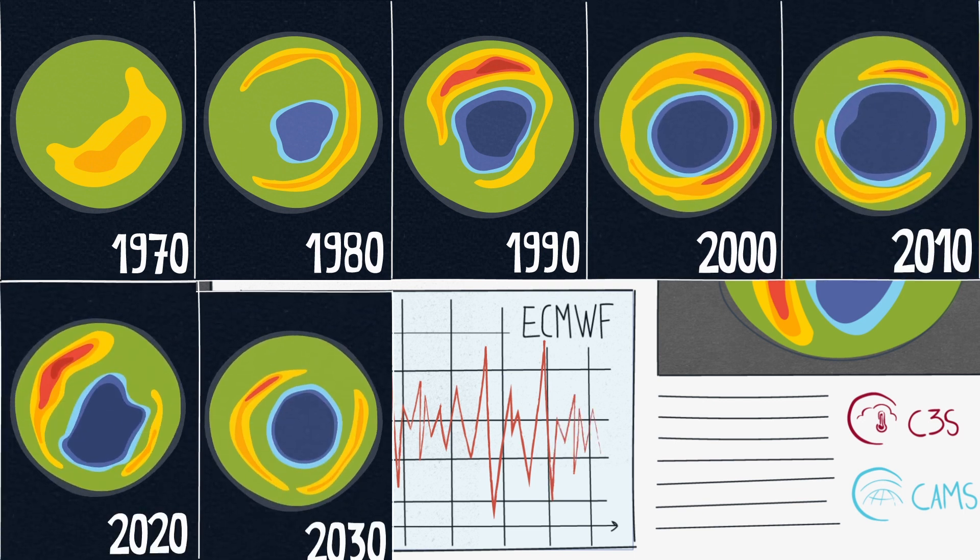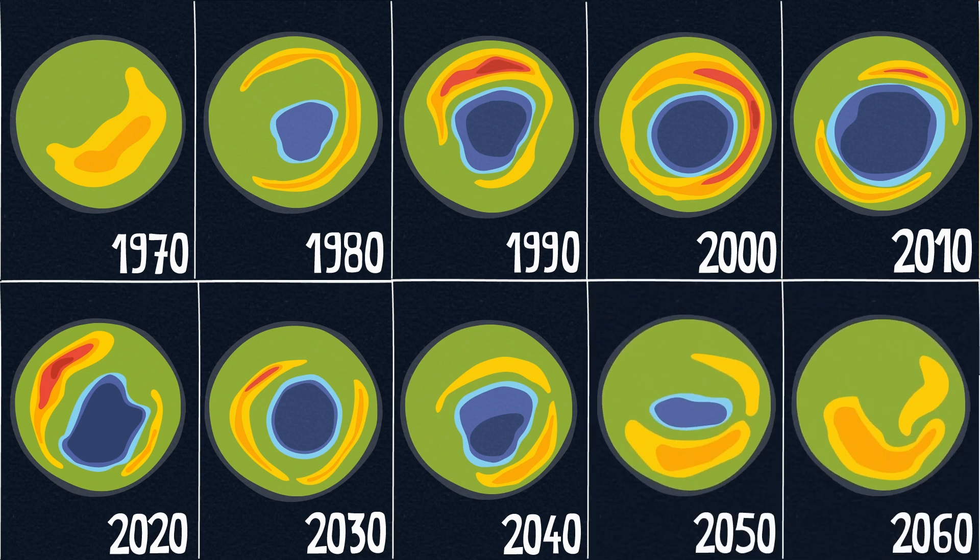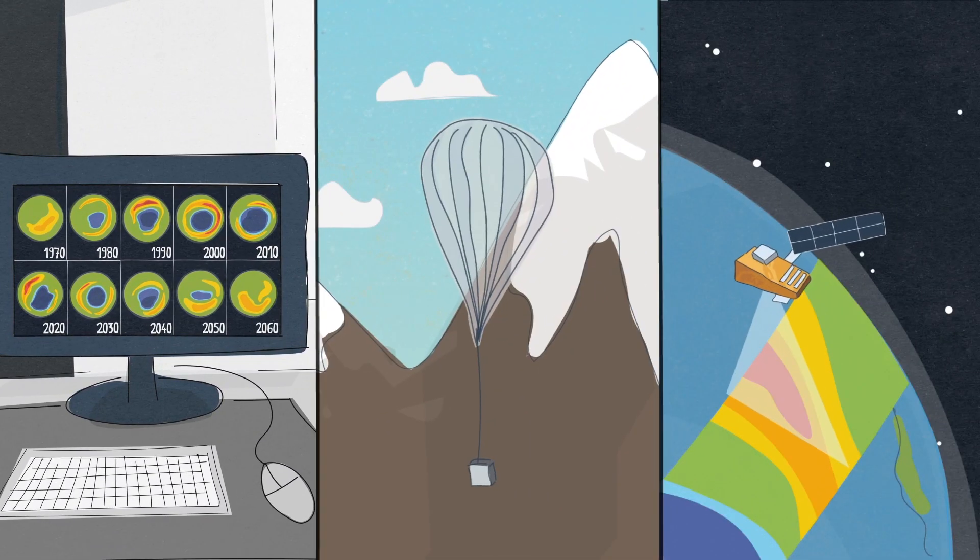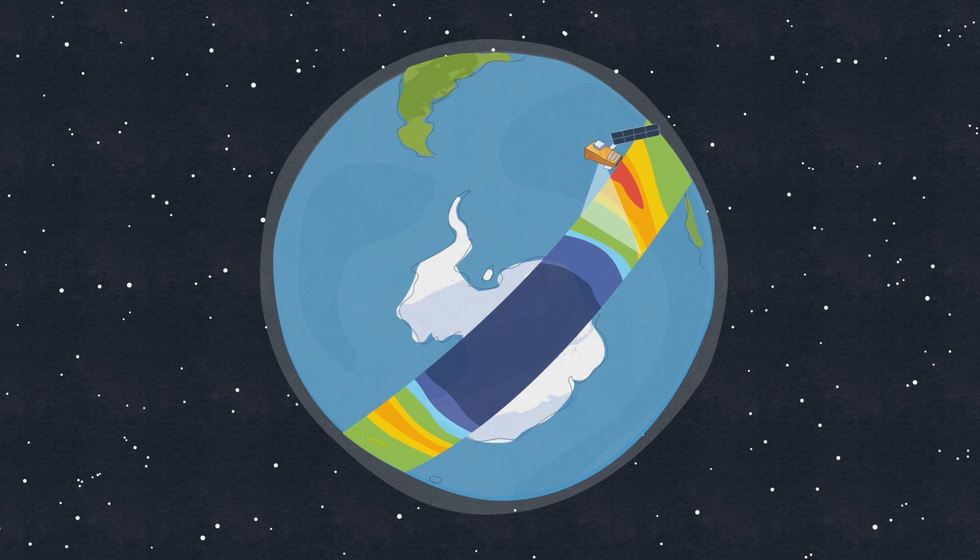Currently estimates suggest it will be 2060 before ozone production returns to pre-1970 levels. Good science, early discovery and monitoring means it is possible to take action and repair man-made impact on our world.